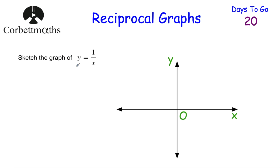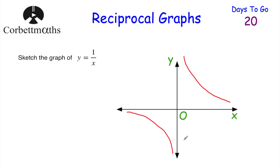This question asks us to sketch the graph of y equals 1 over x. It's a reciprocal graph, so it would look something like this - with the x-axis and y-axis being asymptotes. That's the sketch of y equals 1 over x. It's important to know that shape.